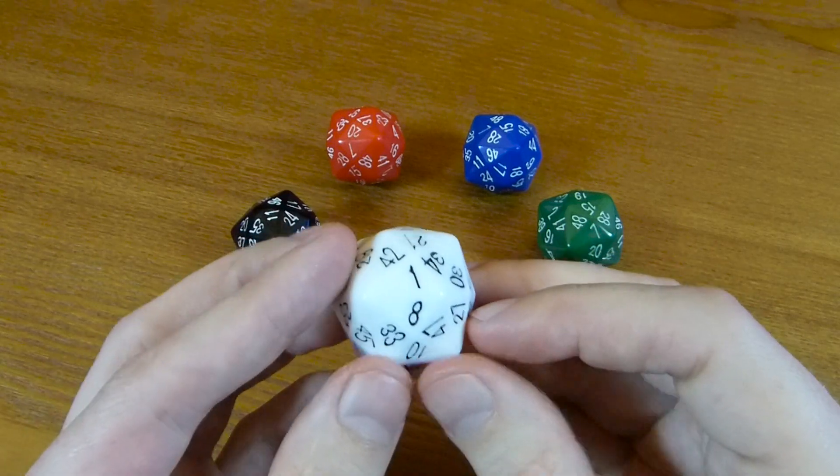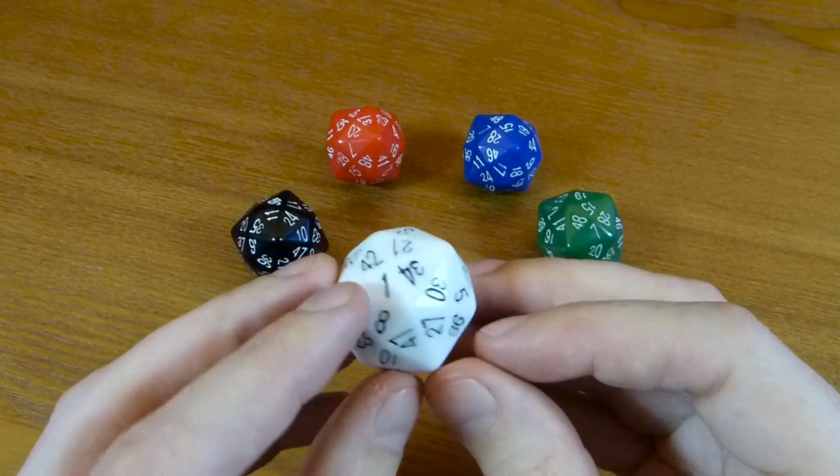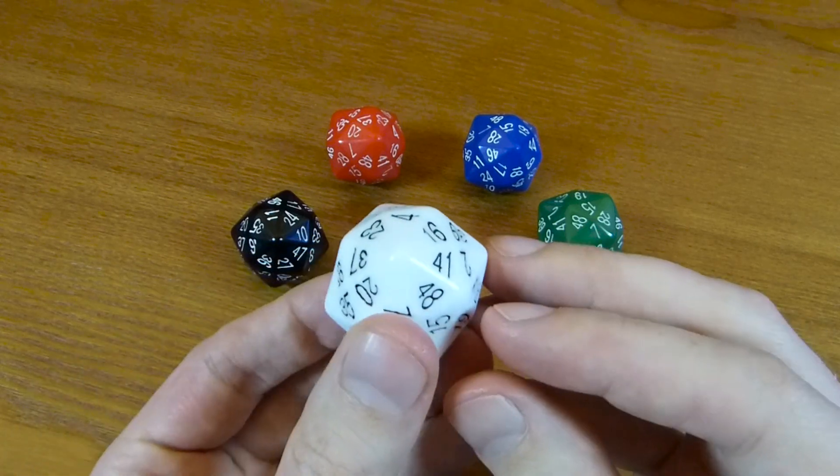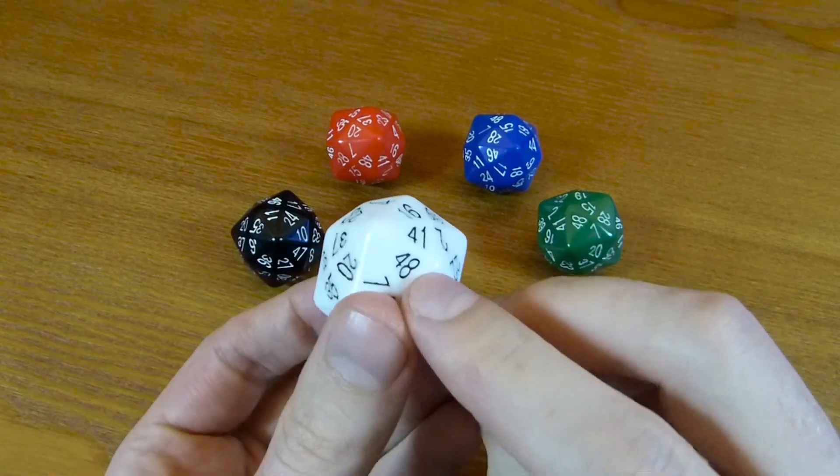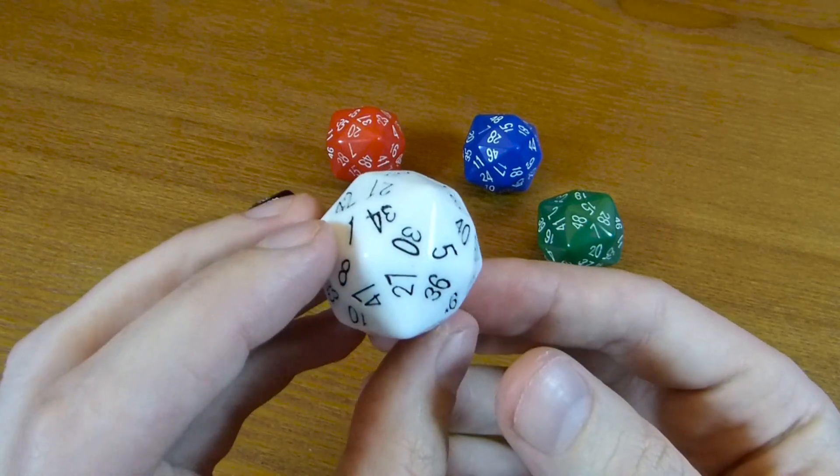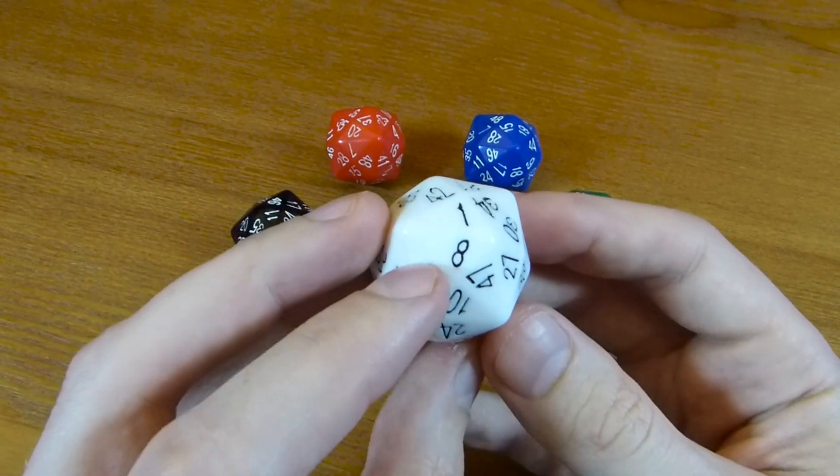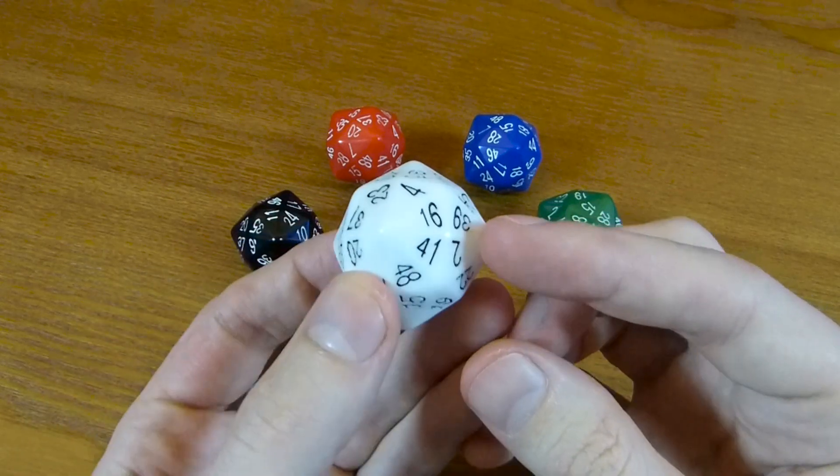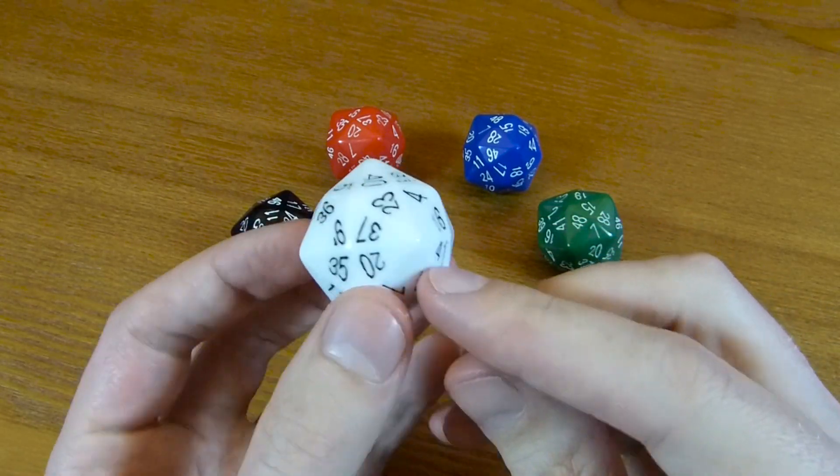So what does perfectly numerically balanced mean? Well, of course, opposite sides have to add up to one more than the number of sides on the die. So 48 and on the opposite side is 1, so that adds up to 49. And 8 on the other side is 41. Again, 41 plus 8 is 49.